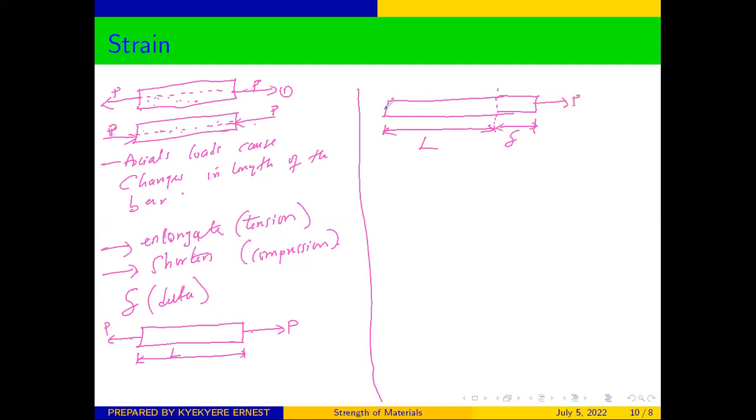Therefore, we are seeing that the loads which are applied at the end has caused an increase in the original length of the bar. This increase, this change in length, is what we call elongation.